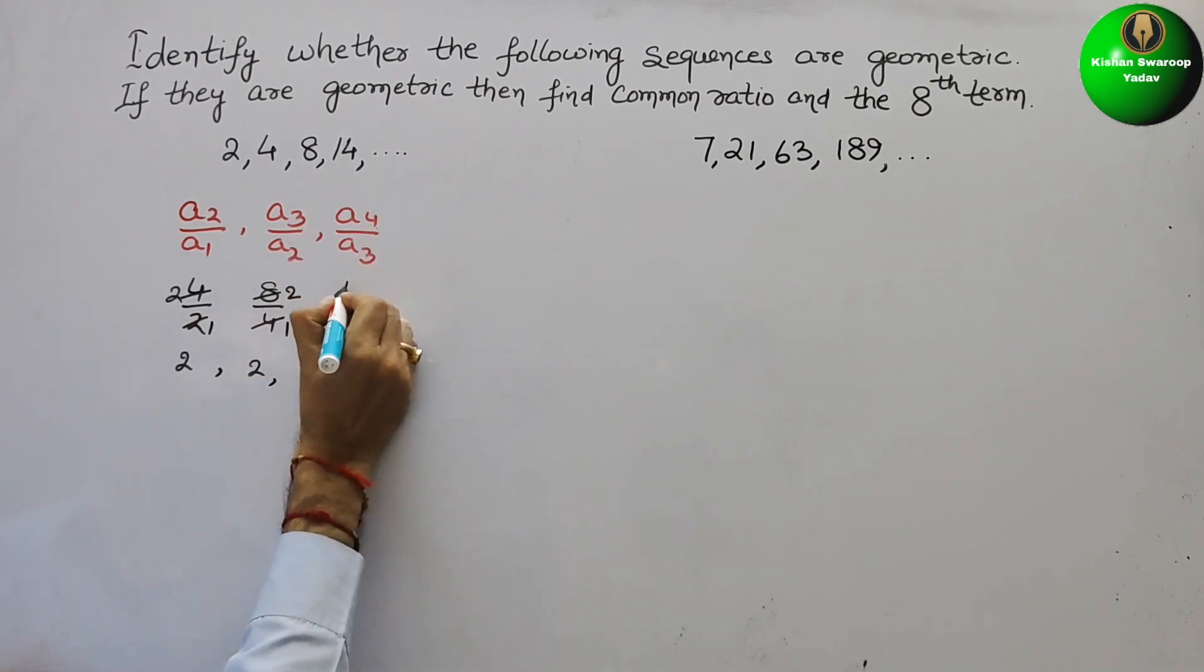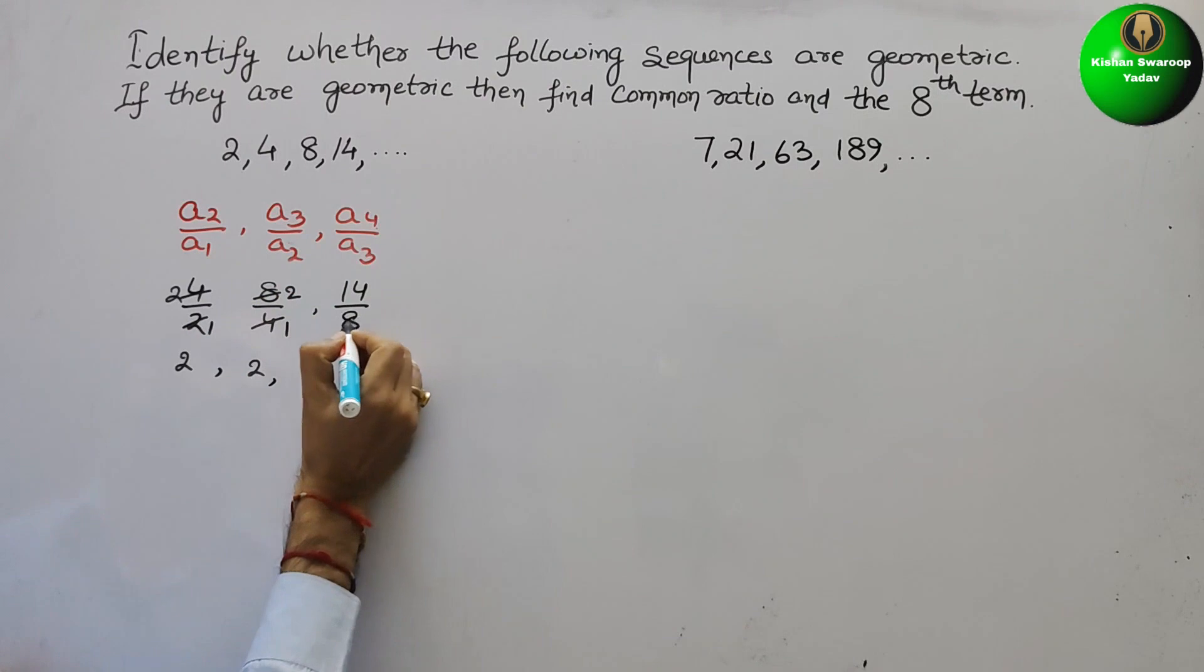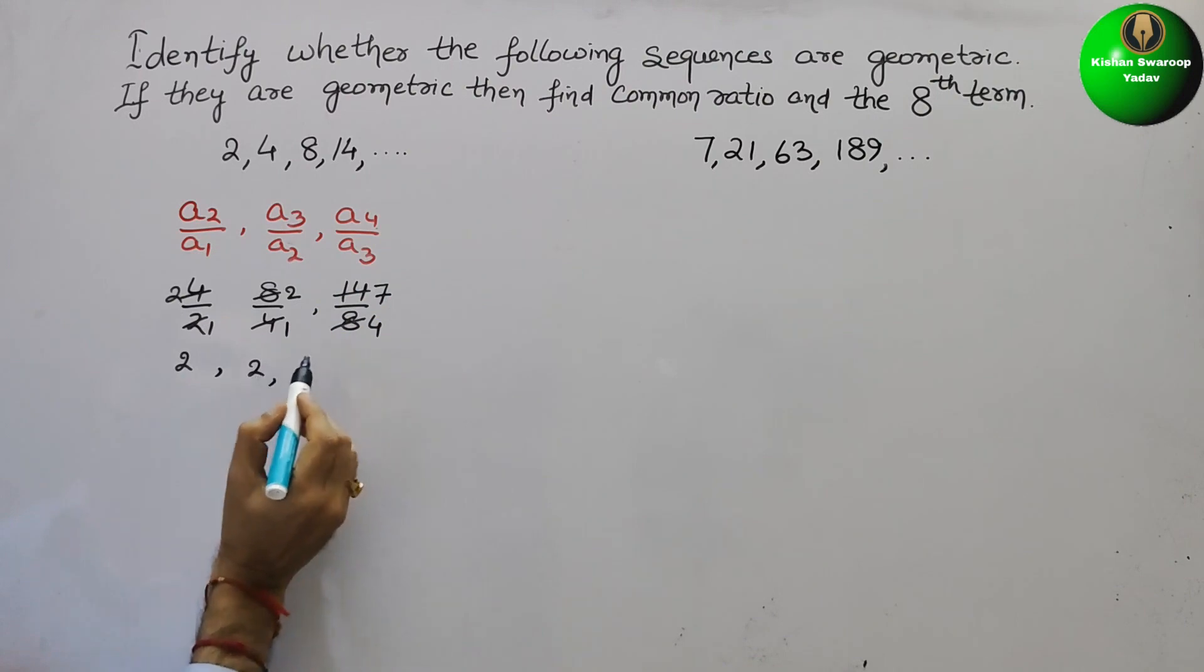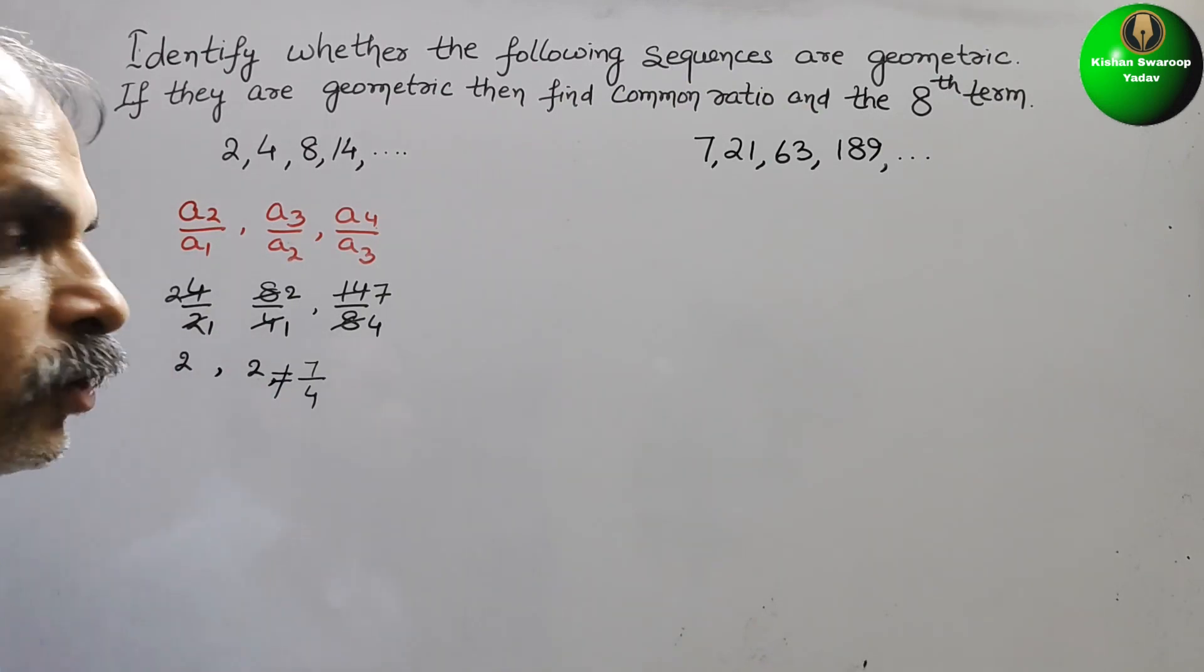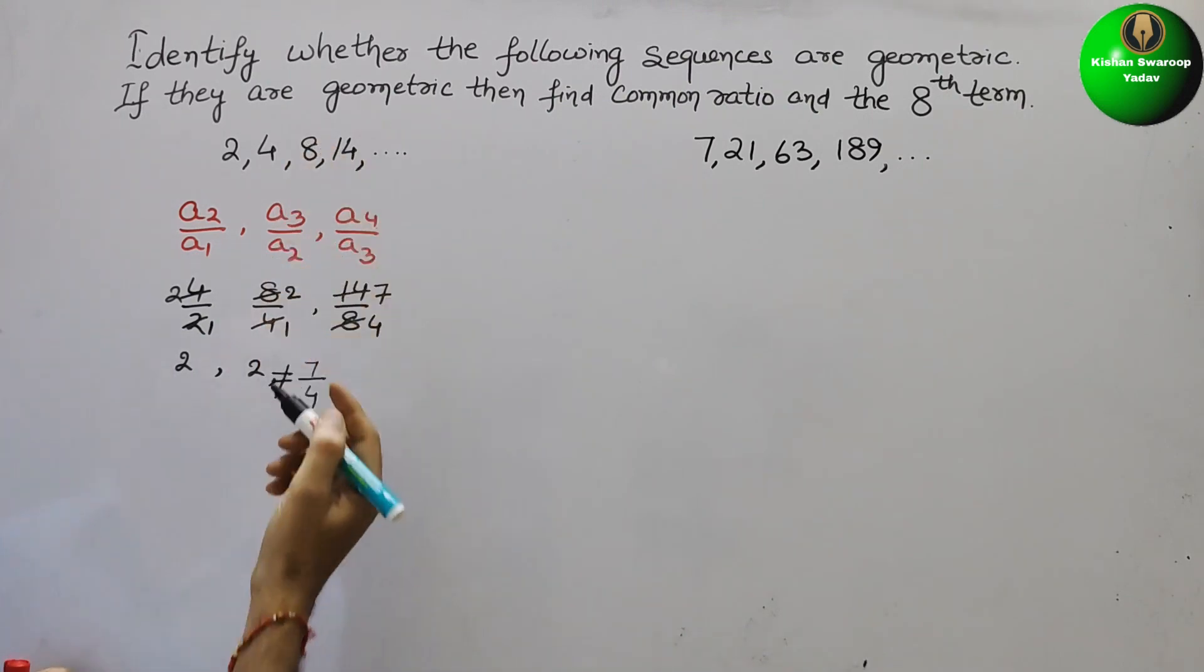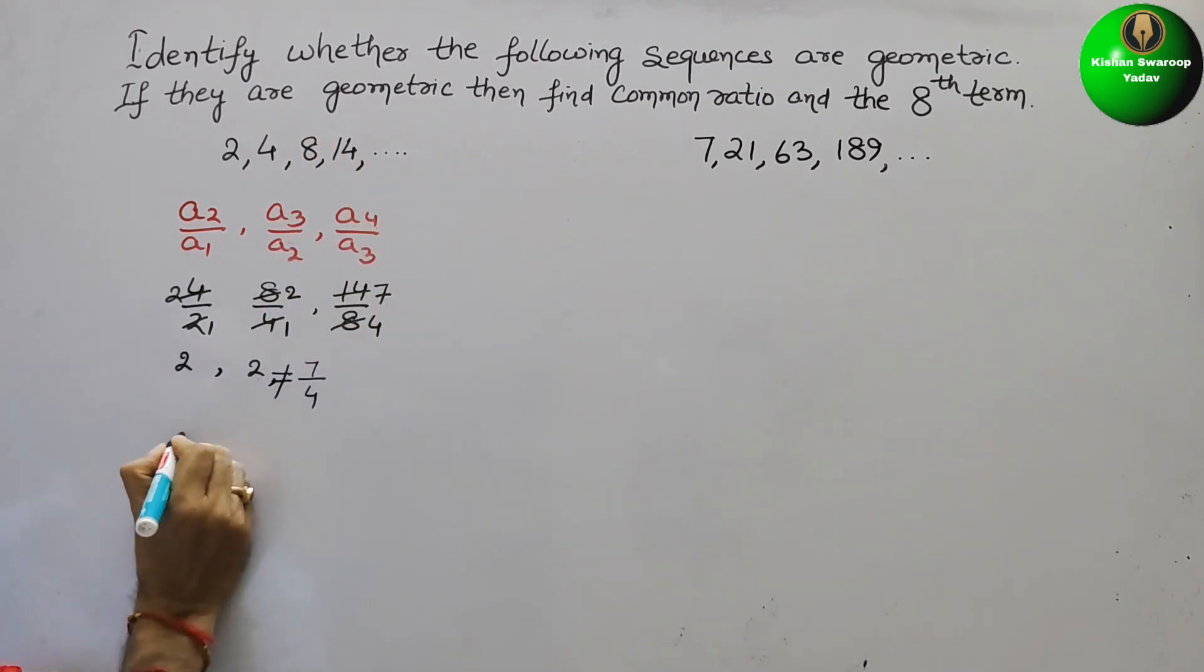Next, it's 14 by 8. Reduce by 4 or 2. So it will be 4, it will be 7. That means 2 is not equal to 7 by 4. It should be equal. Therefore, we can say this is not GP.